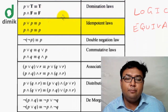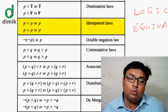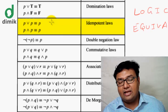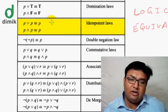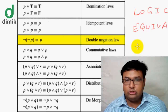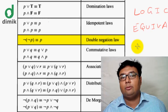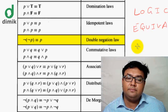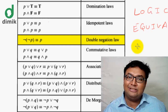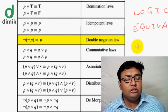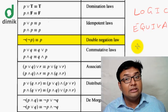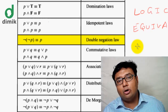This brings us to the Idempotent Law: P OR P equals P, and P AND P equals P. We also have the Double Negation Law: NOT(NOT P) equals P — applying negation twice returns the original proposition.